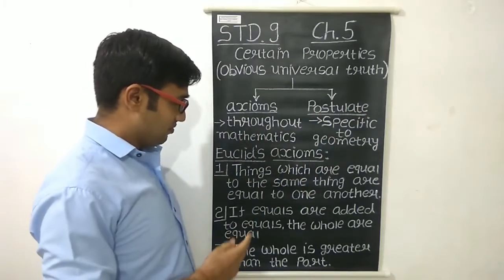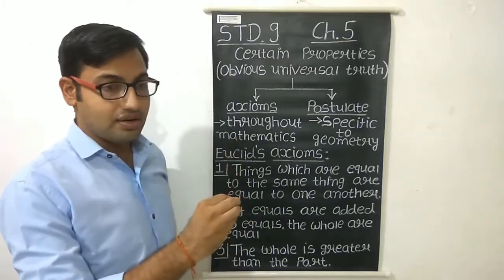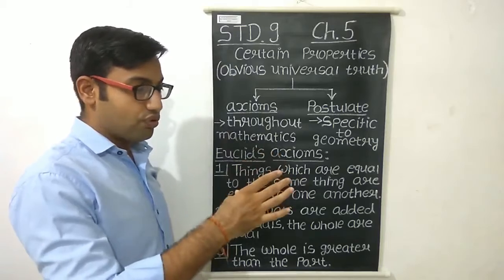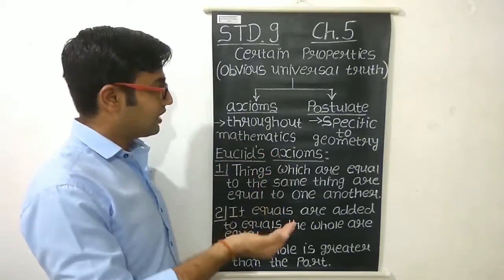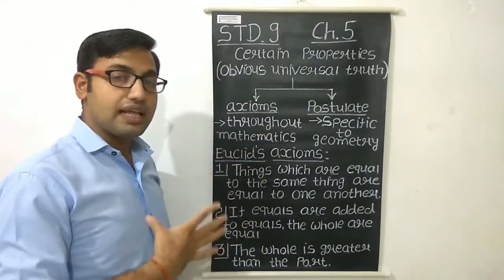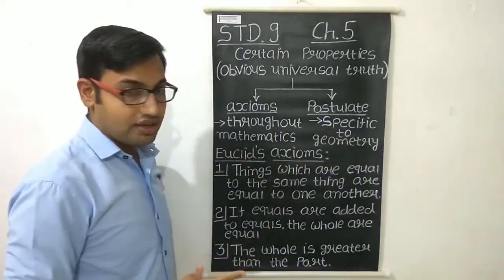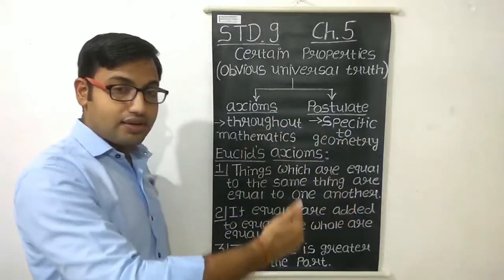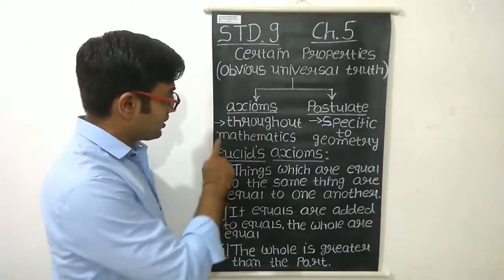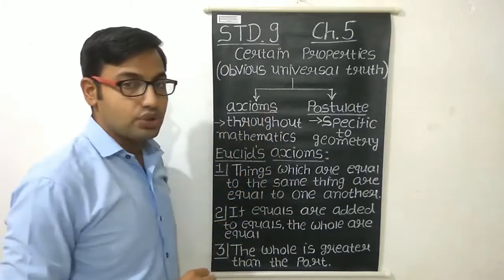For example, some property related to drawing — like a line segment — we will see in the axioms. The property which is related to length, because a line has some length, is specific to geometry only. We cannot take that property related to the line segment as useful to the axioms. So axioms are those which are used throughout mathematics.